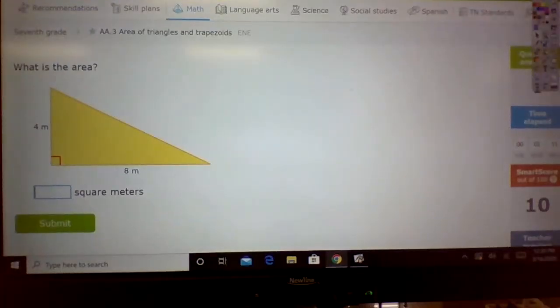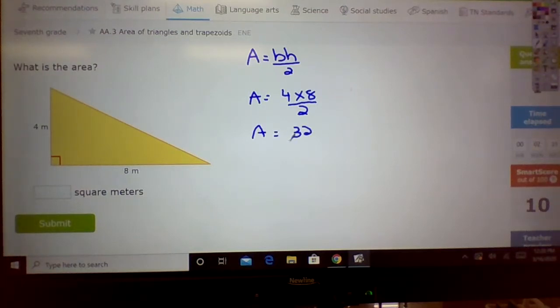Alright, again always write your formula. A equals base times height divided by 2. So in this case we have 4 times 8 divided by 2. What is 4 times 8? 32 divided by 2. A is equal to 16.